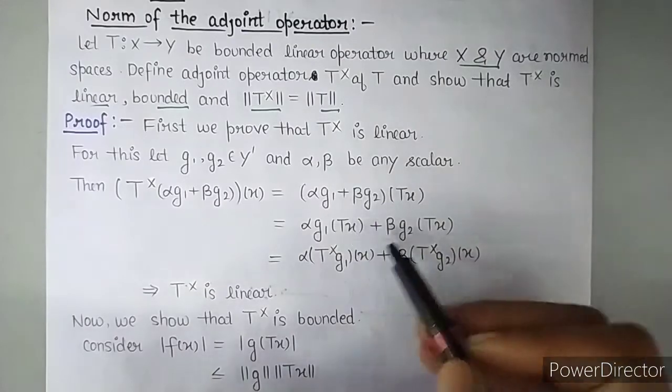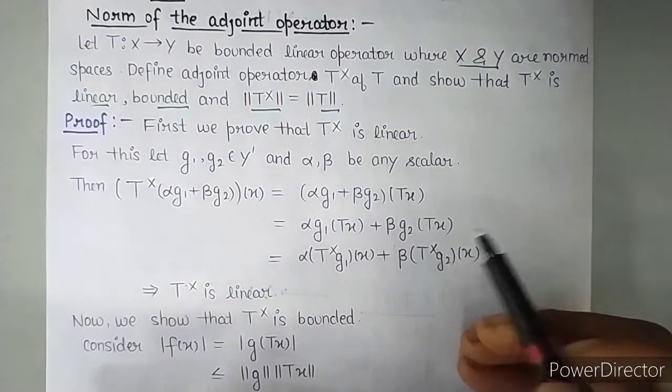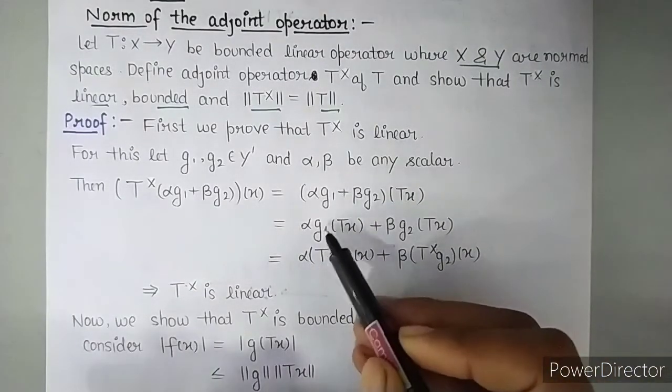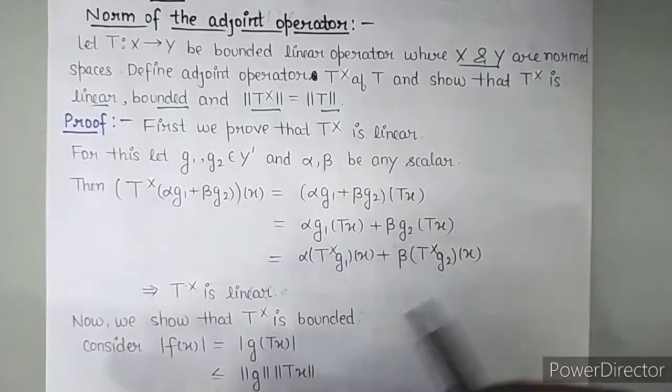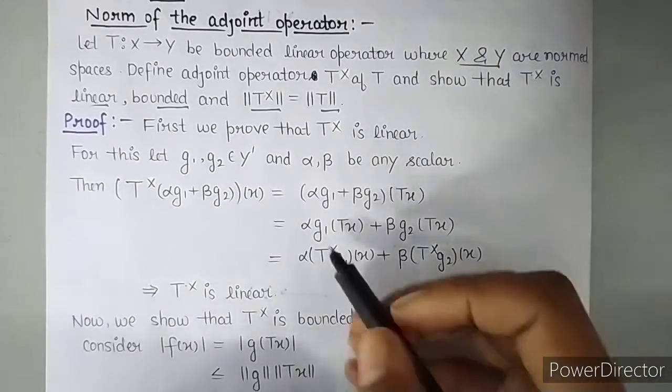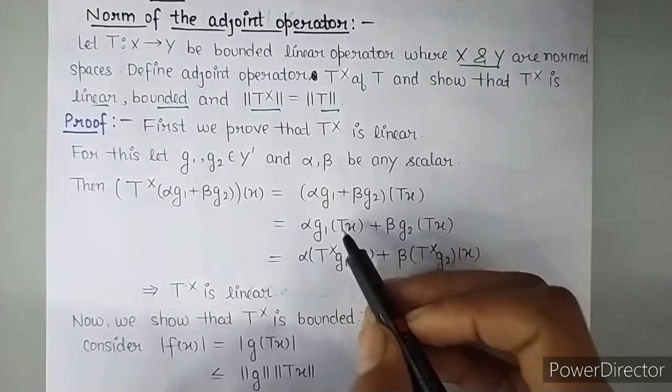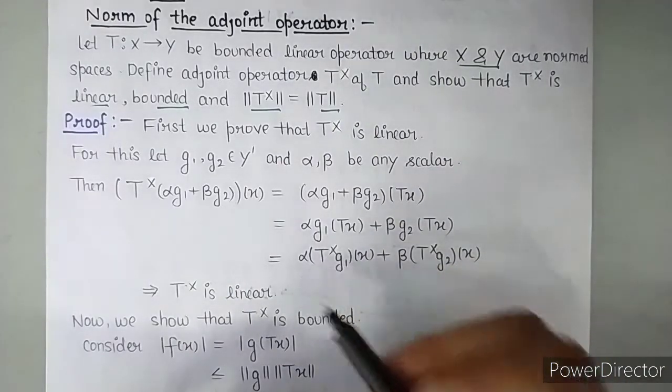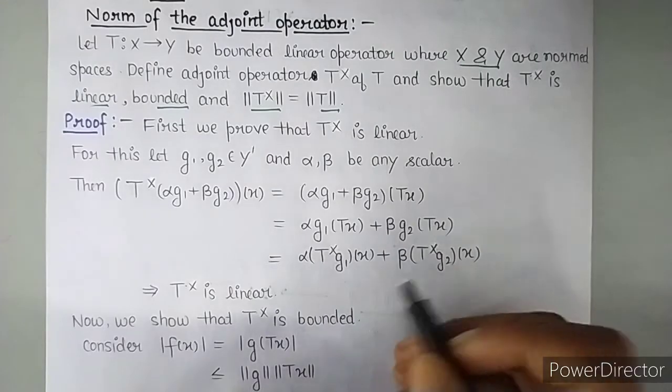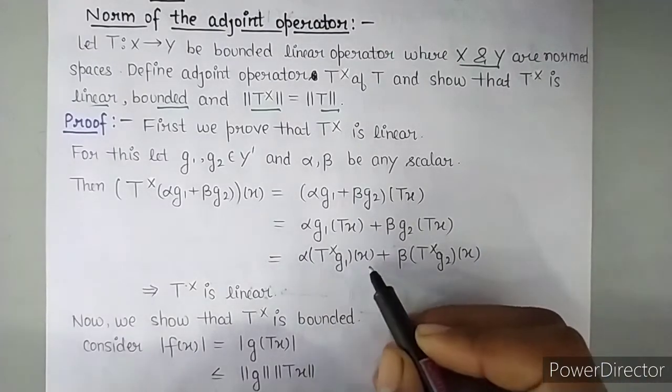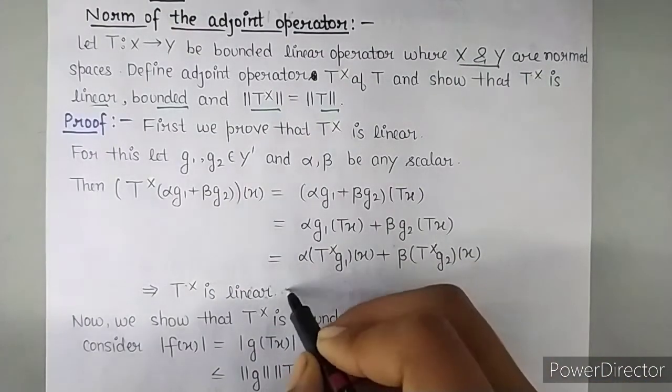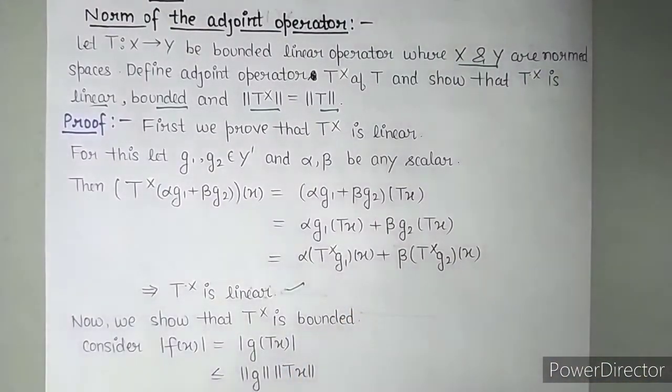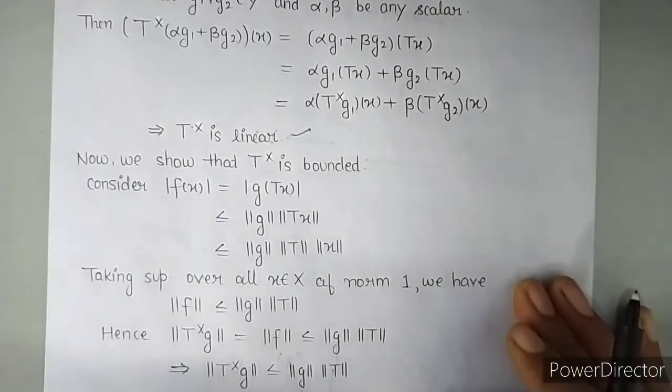Then just as I sent T inside and brought G outside, by the same process if I send G inside and bring T back outside, it will become T star. So alpha T star G1 of X plus beta T star G2 of X. So this implies that T star is linear. So one thing we have proved that it is linear.